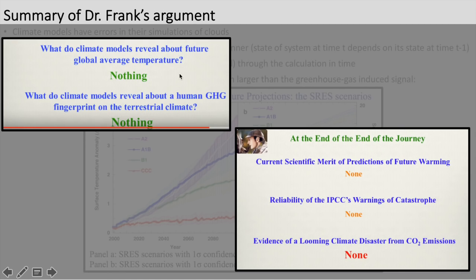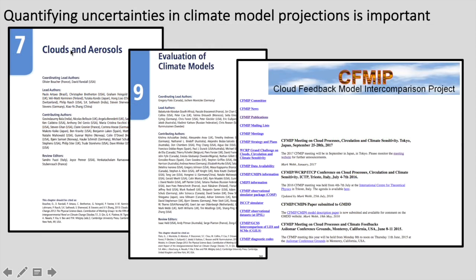Climate models don't tell us anything about the human greenhouse gas fingerprint on terrestrial climate. There's no merit to projections or predictions of future warming. The IPCC's warnings of catastrophe have no reliability, and there's no evidence for a looming climate disaster from CO2 emissions. I want to point out that quantifying uncertainties in climate model projections is really important — particularly uncertainties in how clouds and aerosols operate and how to simulate them — for both understanding current climate and projecting it into the future.